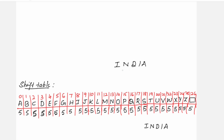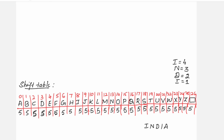Computing manually: after the first letter I in the pattern, there are 4 letters after it, so I gets value 4. After N, there are 3 letters (D, I, A), so N gets value 3. After D, there are 2 letters, so D gets value 2. After the second I, there is only 1 letter (A), so I gets value 1. We do not carry this out for the last letter A.